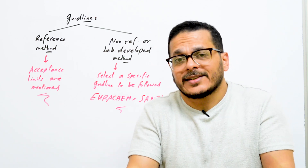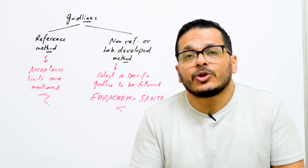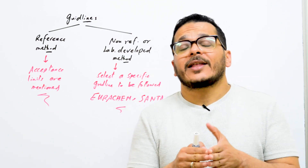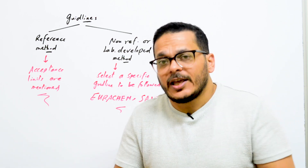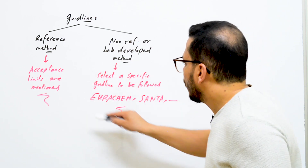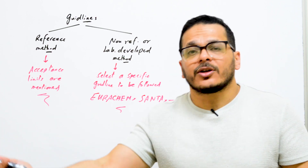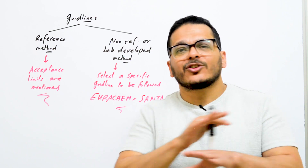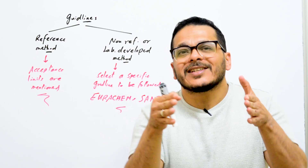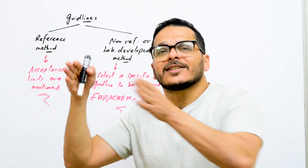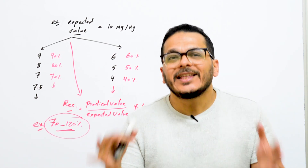You find different publications and try to develop your method inside the lab based on your budget, the chemicals you have, and the instruments available. You then develop one method specific to your lab, which you need to validate. You select a specific guideline to follow, such as EURACHEM, SANTE, or any other guideline. In these guidelines, you will find all acceptance limits for every quality control procedure, and in reference methods as well. So you need to control errors to ensure all results are accurate and valid within an acceptable range.